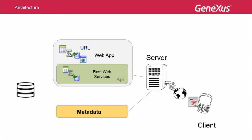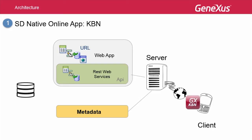For prototyping, we have two options: to execute a sort of special browser created by Artec known as the KBN, or to install the compiled application. We will consider each of them. The KBN, or Knowledge-Based Navigator, is a native application compiled in the language of the platform that must be installed on the device before we start prototyping.